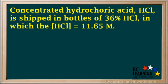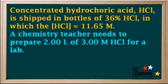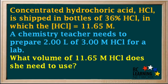Concentrated hydrochloric acid, HCl, is shipped in bottles of 36% HCl, in which the concentration of HCl is 11.65 M. A chemistry teacher needs to prepare 2 liters of 3 M HCl for a lab. What volume of the 11.65 M HCl does she need to use?